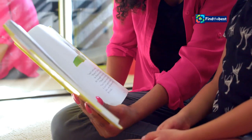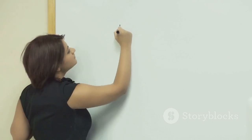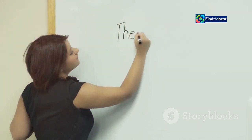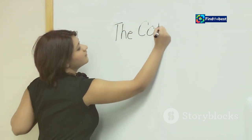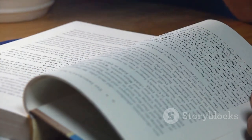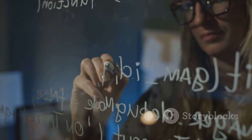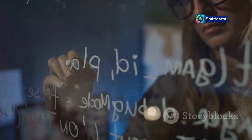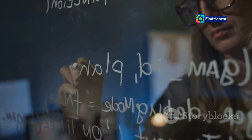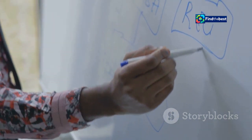Start with a hook — this could be a thought-provoking question, a surprising statistic, or a relatable anecdote. The hook is your tool to draw readers in, piquing their interest and making them want to learn more. Once you have their attention, introduce your topic and state your main argument or thesis statement. This is the central idea you'll be exploring throughout your essay — make it compelling and clearly articulated.